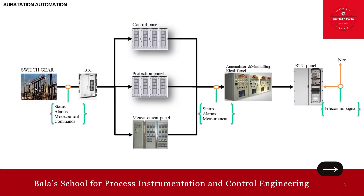The switchgear in a substation refers to the combination of electrical disconnect switches, fuses, and circuit breakers used to control, protect, and isolate electrical equipment. This is essential for ensuring the safe and reliable operation of the power system. The key functions of switchgear are control, protection, and isolation.